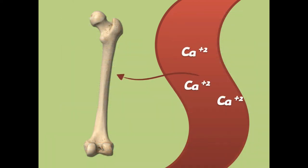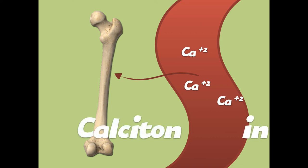To review: calcitonin keeps calcium in the bone. It inhibits osteoclasts — which break bone apart by detaching calcium ions — and it stimulates osteoblasts, which deposit calcium back into the bone. Calcitonin keeps calcium in the bone.